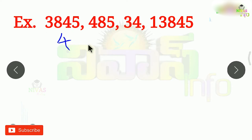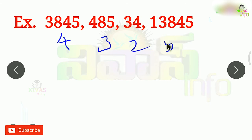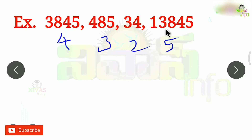Here you can count 1, 2, 3 — hundreds. Here you can count 1, 2, 3, 4, 5. So we have to count: 1,000 in which there are 3 digits. Two digits make a number in the hundreds; five digits make a number with 5 digits.